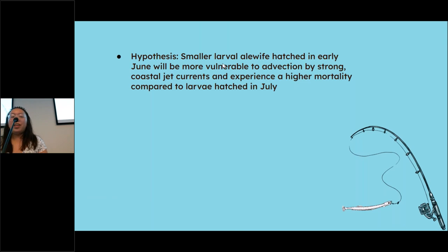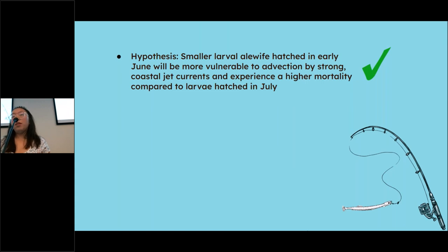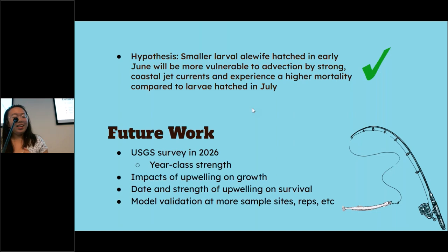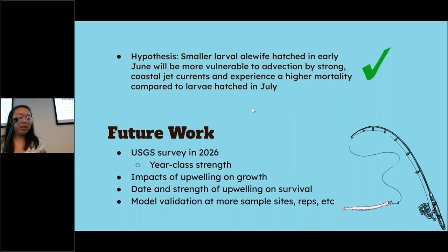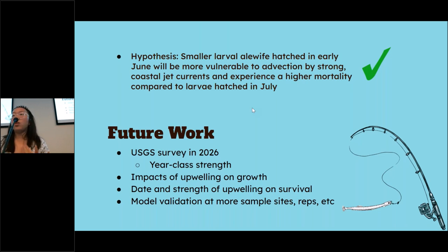Our earlier hypothesis — that smaller alewife hatched in early June would be more vulnerable — was supported by our findings this year. In 2015, alewife density was very high in June but very low in July, possibly because of the upwelling. Future work includes looking at year class strength in 2026 to assess 2023 alewife recruitment success, examining the impacts of upwellings on alewife growth, looking at how the date and strength of upwellings may impact populations long-term since upwellings may become more frequent and stronger due to climate change, and doing more model validation by collecting more samples, visiting more sites, and increasing replicates.